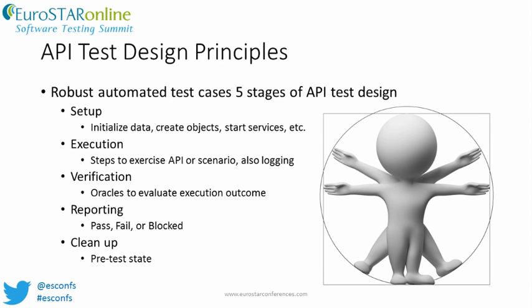The verification steps call on the oracles of test automation. Oracles are methods or functions usually used to compare actual results against expected results. For example, oracles can be used to verify correct exceptions or error codes, verify object creation, and verify output parameters or return values. Oracles can also be used to validate machine state or conditions between test execution statements.